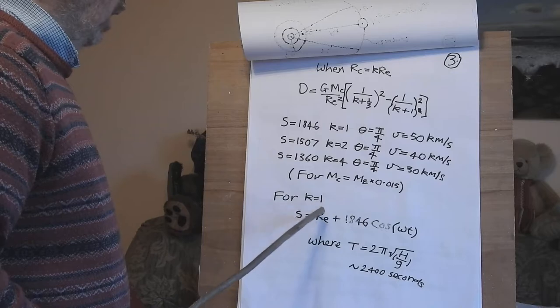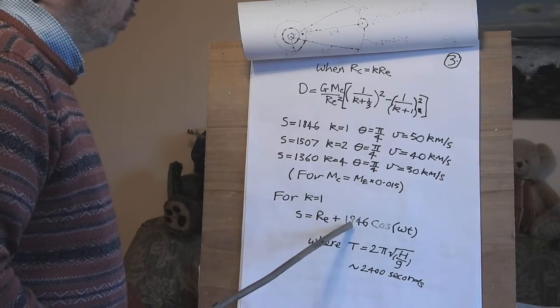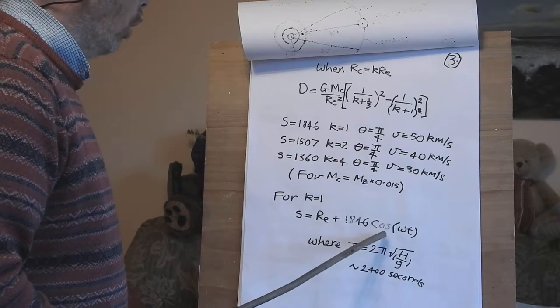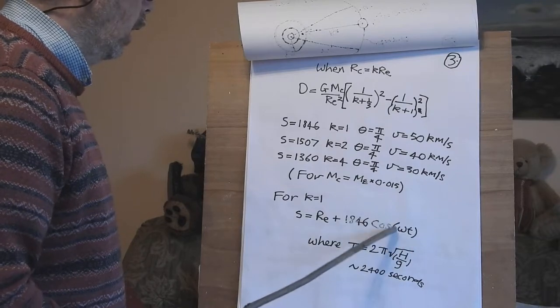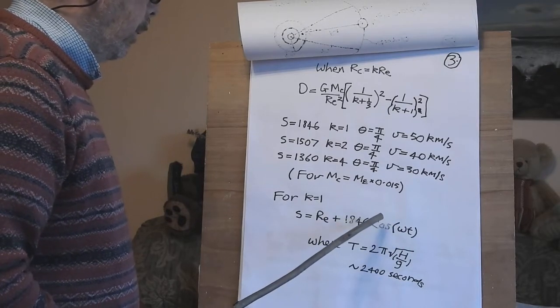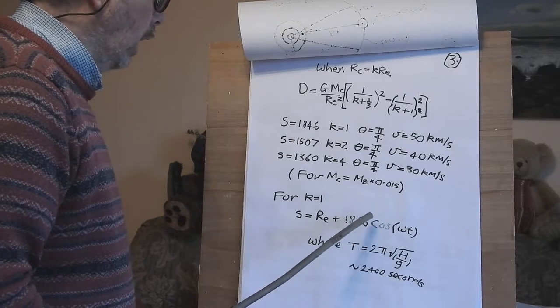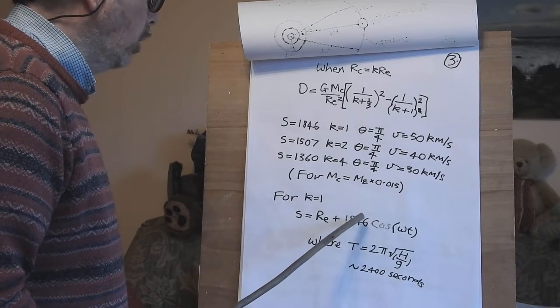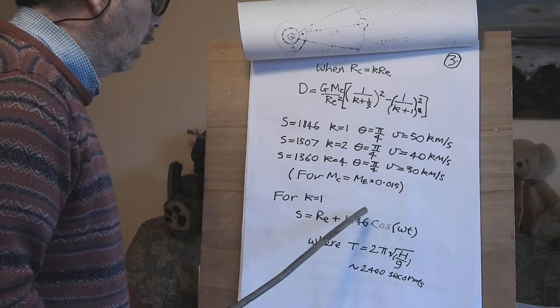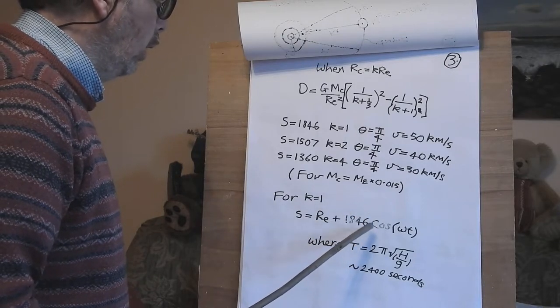For K equals 1 we get S equals the radius of the Earth plus 1.8 km cos omega t. So this goes from Re plus 1846 down to Re minus 1846.